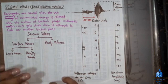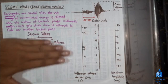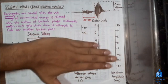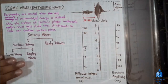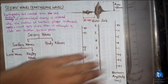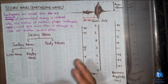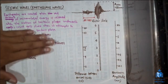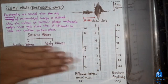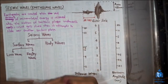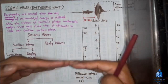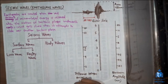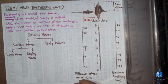Love waves travel laterally on the earth's surface like a snake — they move sideways. Rayleigh waves move like ocean waves. Rayleigh waves are a mix of transverse and longitudinal motion, while Love waves are transverse waves parallel to the earth's surface. An animation is attached so you can visualize these motions clearly.